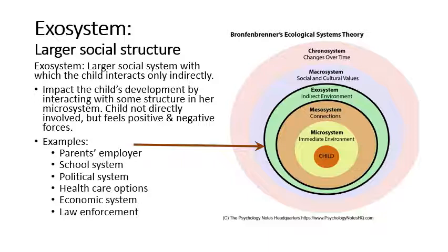The child might not interact with the parent's boss at work, but the way the boss treats the parent impacts the child — is the parent stressed when they come home? Is there enough money for the family? The school system is another example: how rigorous is it, how much does it value competitiveness, does it have the resources it needs, does it hire teachers who adhere to a certain philosophy? That's the way the structure impacts the child.